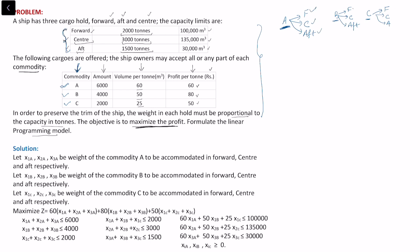Let x1a, x2a, x3a be the weight of commodity A accommodated in forward, center, and aft respectively. Similarly, x1b, x2b, x3b for commodity B, and x1c, x2c, x3c for commodity C in the three locations. The objective function is to maximize profit: 60(x1a + x2a + x3a) + 80(x1b + x2b + x3b) + 50(x1c + x2c + x3c).